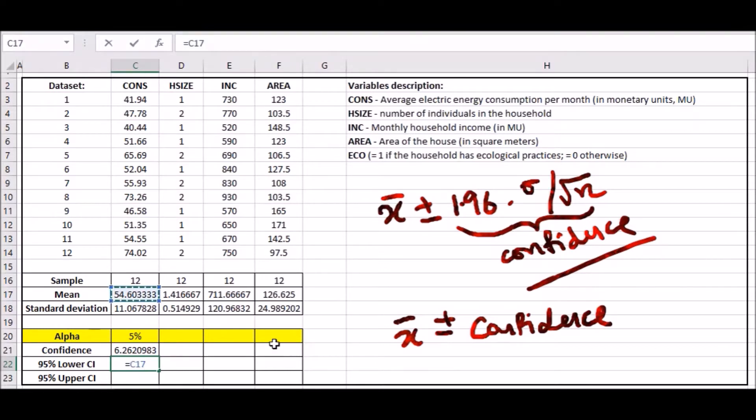The upper would just be the plus version. Press equal, click on the mean, plus the confidence value.